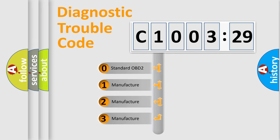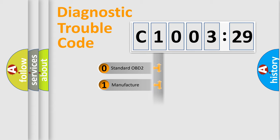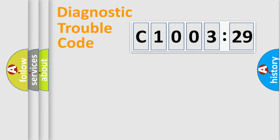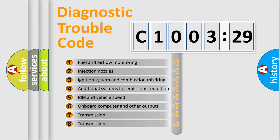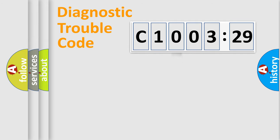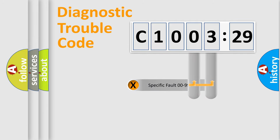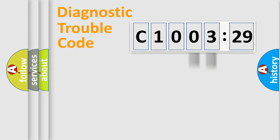If the second character is expressed as zero, it is a standardized error. In the case of numbers 1, 2, or 3, it is a more specific expression of a car-specific error. The third character specifies a subset of errors. This distribution is valid only for the standardized DTC code. Only the last two characters define the specific fault of the group.